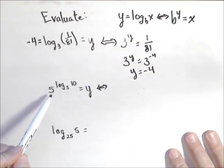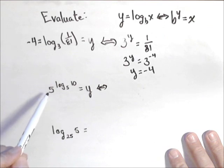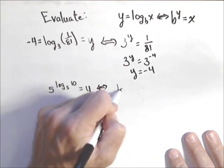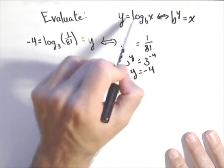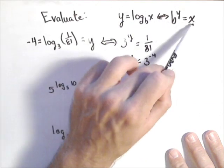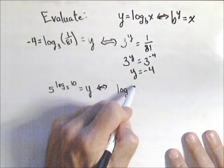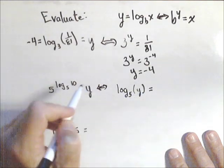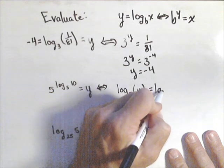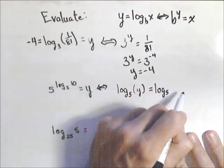Our base of our exponential is also the base of our log. So log base 5 is the base of our exponential. What am I taking the log of? What it's equal to. So log base 5 of y equals the exponent, which is log base 5 of 10.